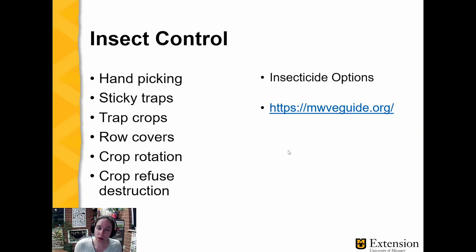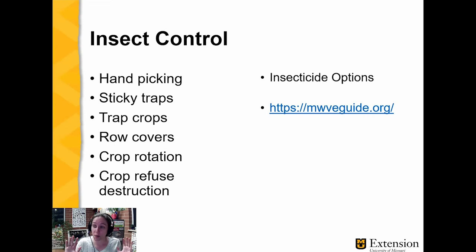For insect control, it really depends on how many you're looking at controlling. You can handpick, use sticky traps, or use trap crops as discussed in the insect class. Particularly with squash bugs, trap crops do work because they really like blue Hubbard squash. You can plant those early and around your planting to concentrate the insects on the trap crops and not your desirable crops. Row covers can also be effective, particularly on summer squash since they are bush, not vining — they provide a barrier to keep insects out.